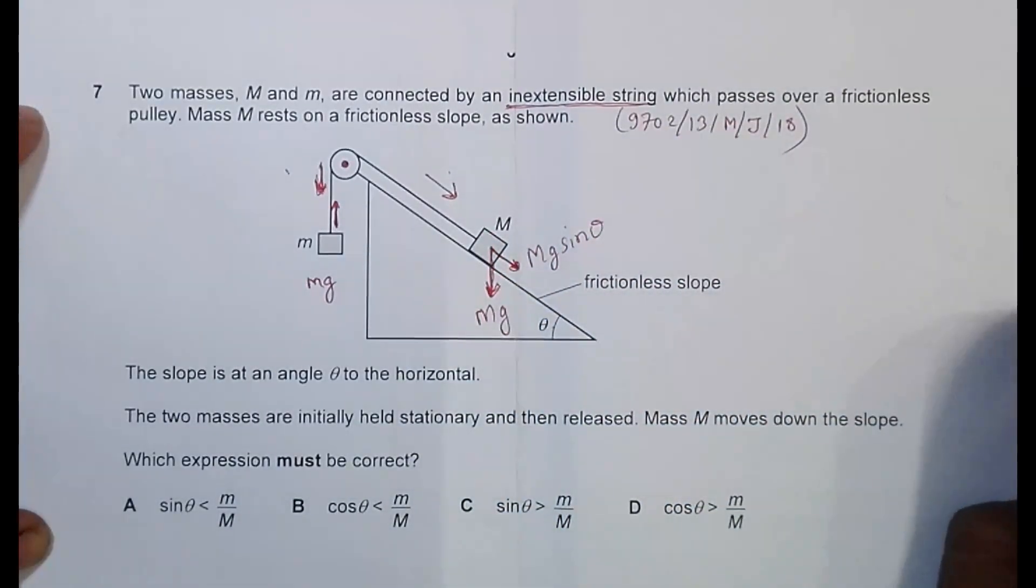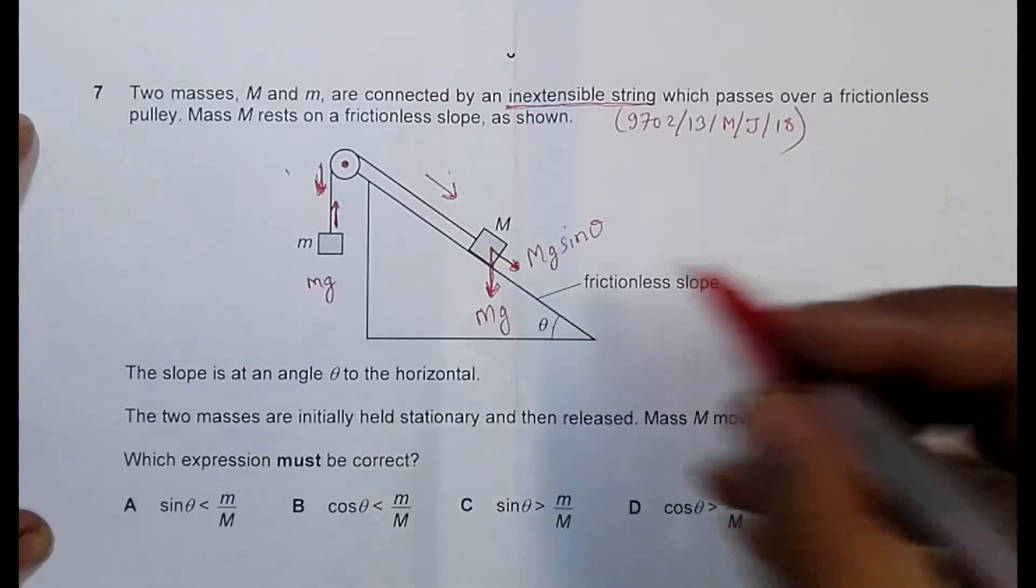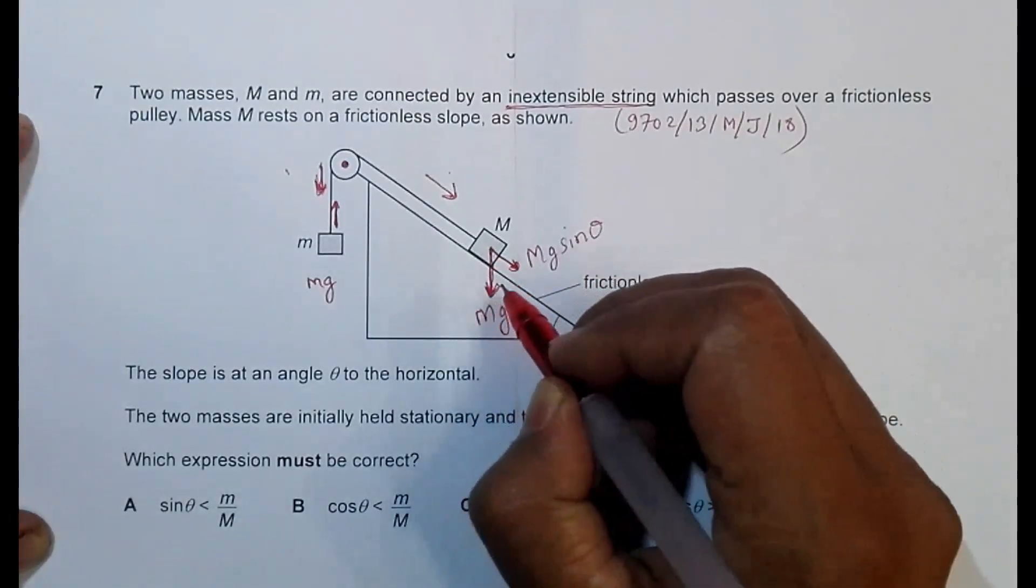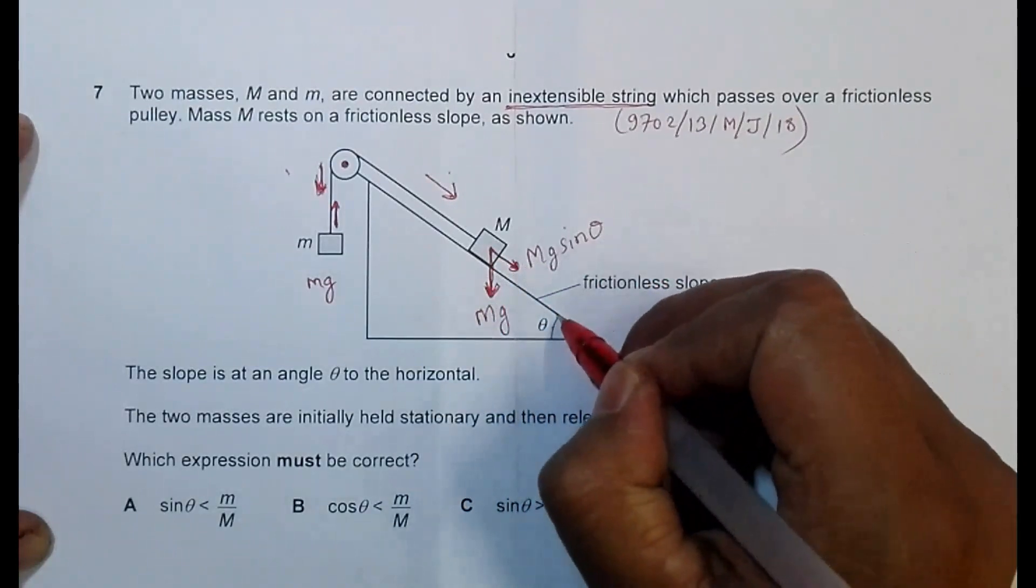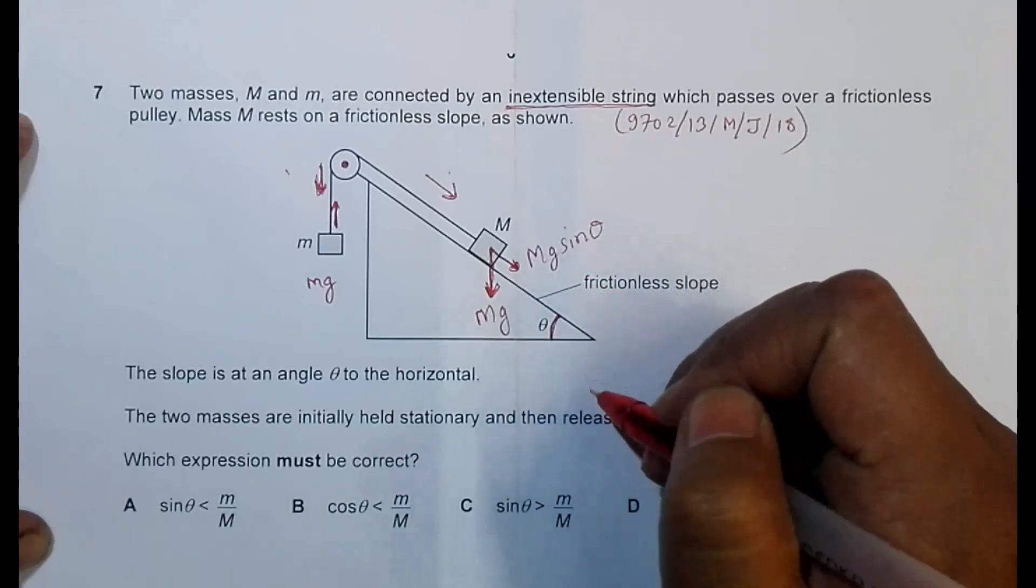So it is actually a formula also and we have to know by heart as well. If this is the weight of the body, the component along the plane surface should be equal to MG sine theta if theta is the angle made by the inclined plane with the horizontal.